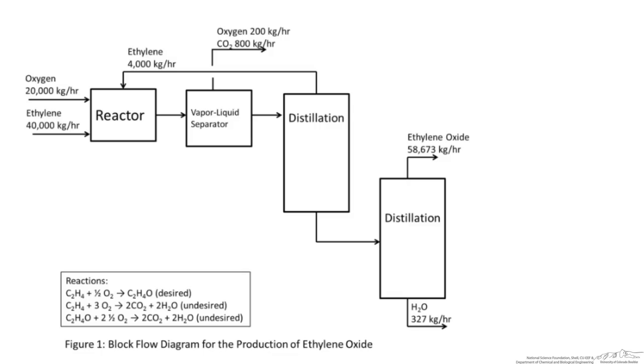so this means that ethylene oxide, along with unreacted ethylene, oxygen, water, and carbon dioxide, come out of the reactor and first go into a flash separator, where the oxygen and carbon dioxide are separated from the heavier components.